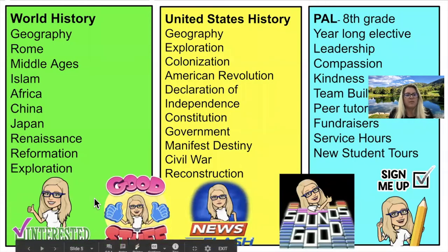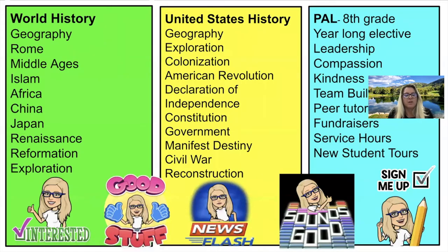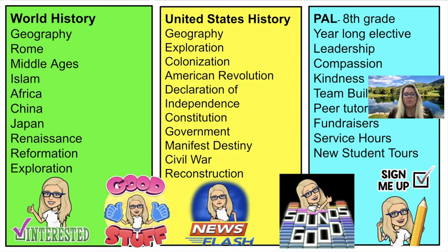Some of the things we'll be covering in world history include geography, the rise and fall of Rome, the Middle Ages, Islam, Africa, China and Japan, the Renaissance, Reformation, and exploration. In terms of US history, we cover geography, exploration and colonization of the Americas, the American Revolution, Declaration of Independence, the Constitution, how the government was formed, Manifest Destiny and opening up the West, and the Civil War and Reconstruction.